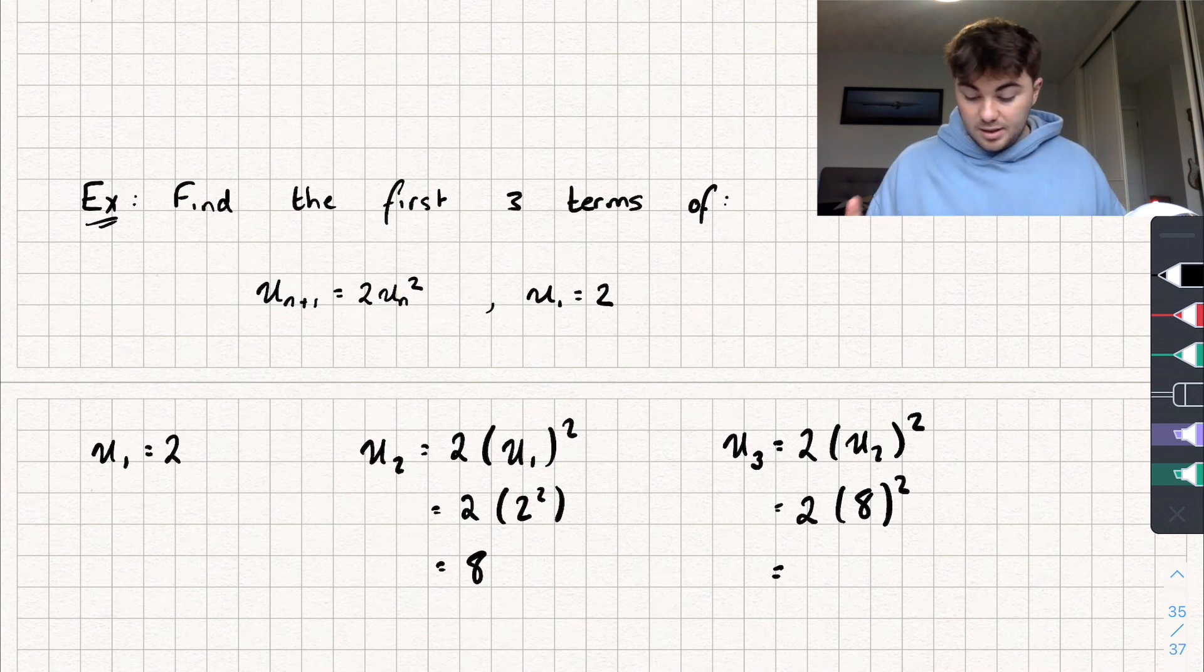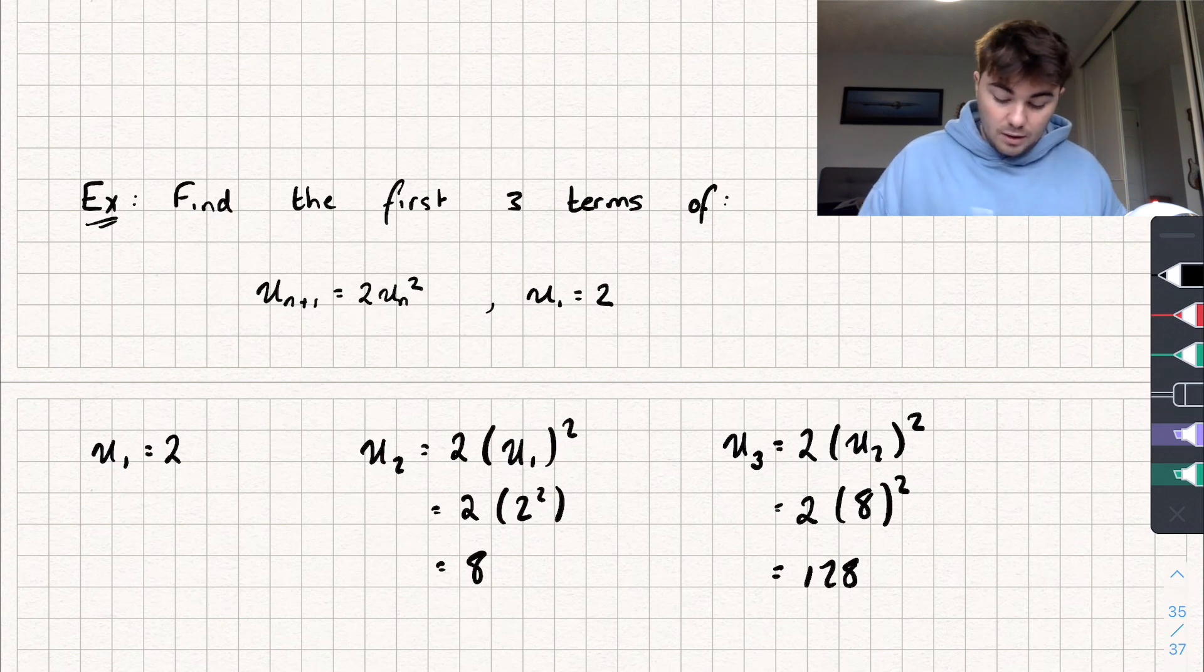Eight times eight is 64. 64 times two is 128. And so these would be the first three terms of this recurrence relation.